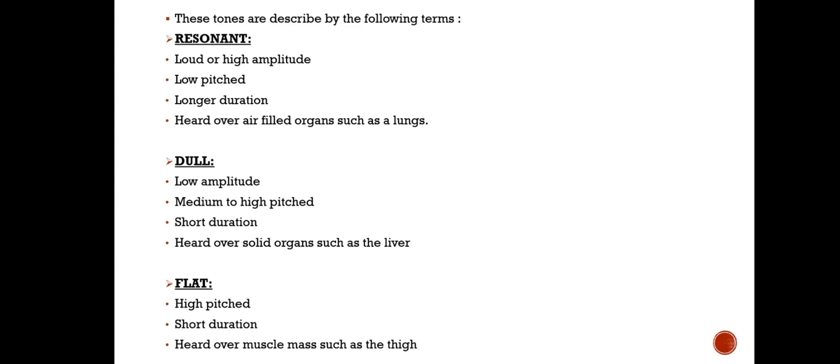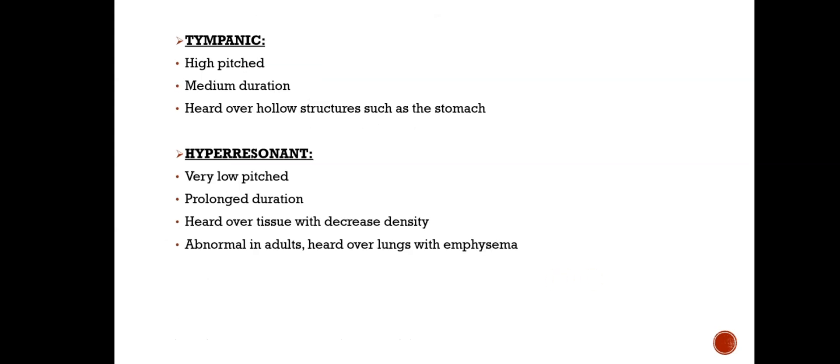Dull tone is low amplitude, medium to high-pitched, short duration, heard over solid organs such as the liver. Flat tone is high-pitched, short duration, heard over muscle mass such as the thigh. Tympanic tone is high-pitched, medium duration, heard over hollow structures such as the stomach. Hyper-resonant tone is very low-pitched, prolonged duration, heard over tissue with decreased density — abnormal in adults, heard over lungs with emphysema.